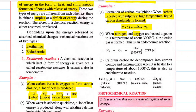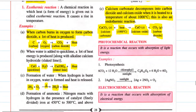When nitrogen and oxygen are heated at 3000°C, nitric oxide gas (nitrogen monoxide) is formed — this is an endothermic reaction because heat must be supplied; without it the reaction will not proceed. Calcium carbonate decomposes into carbon dioxide and calcium oxide when heated to about 1000°C — this is also an endothermic reaction, because heat must be supplied for decomposition to occur.